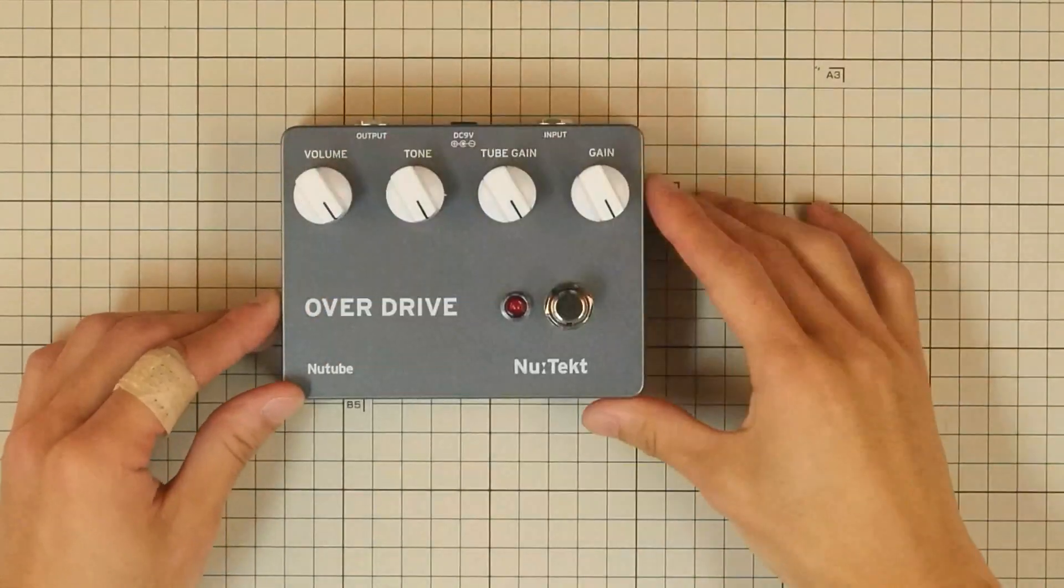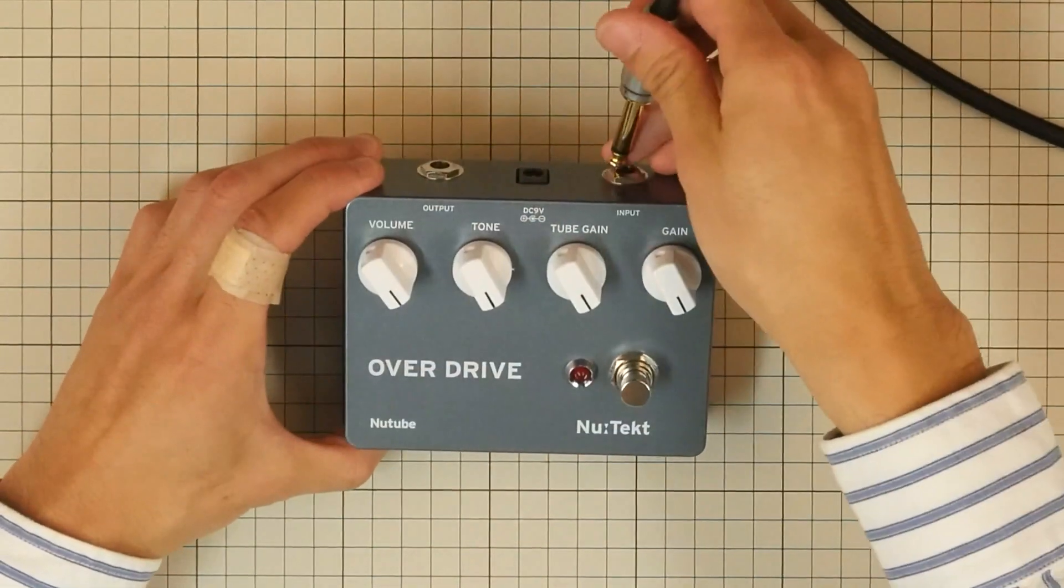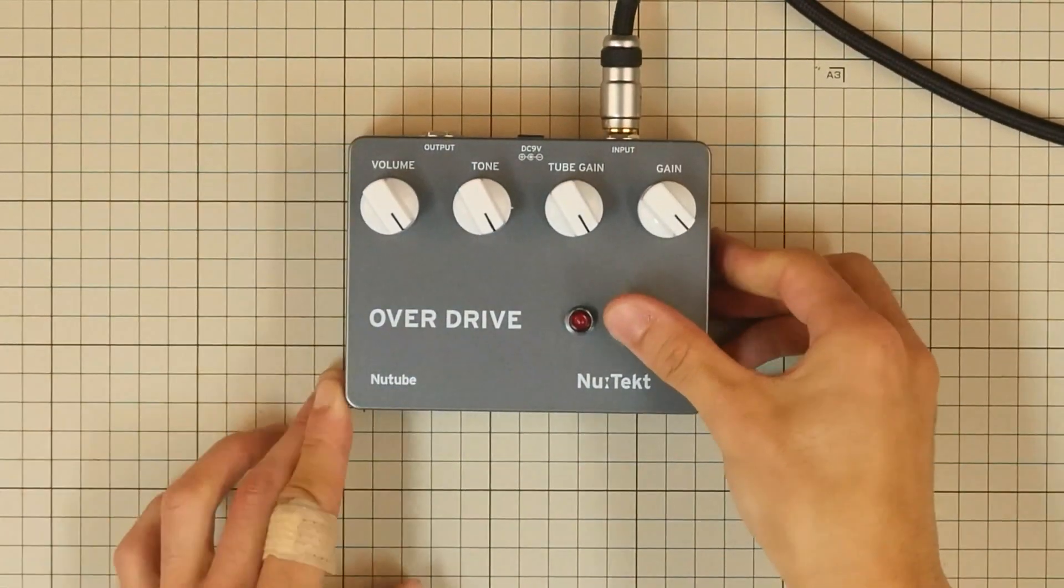And we're done building. Plug a quarter inch cable into the input jack and press the foot switch. The LED should turn on.